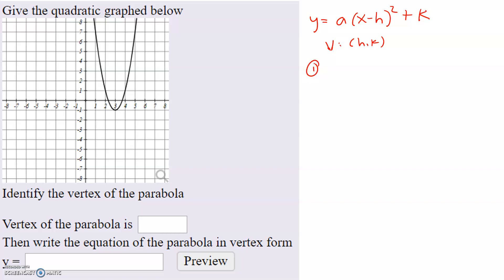So first, let's identify the vertex of the parabola. The vertex is this point right there, which is the point 3 comma negative 1. So the h value is 3 and the k value is negative 1.